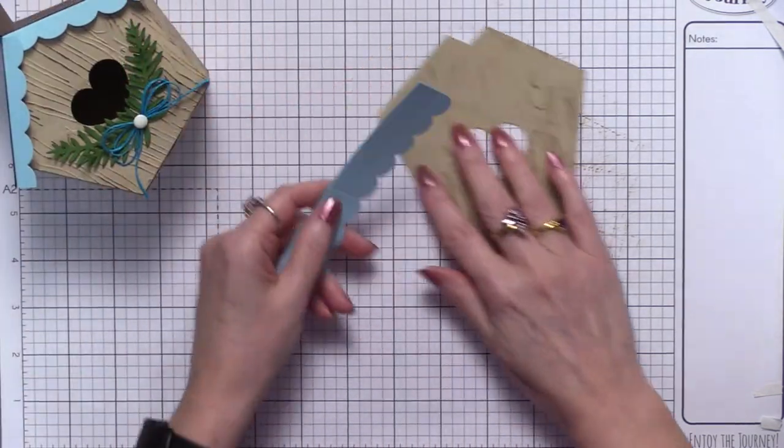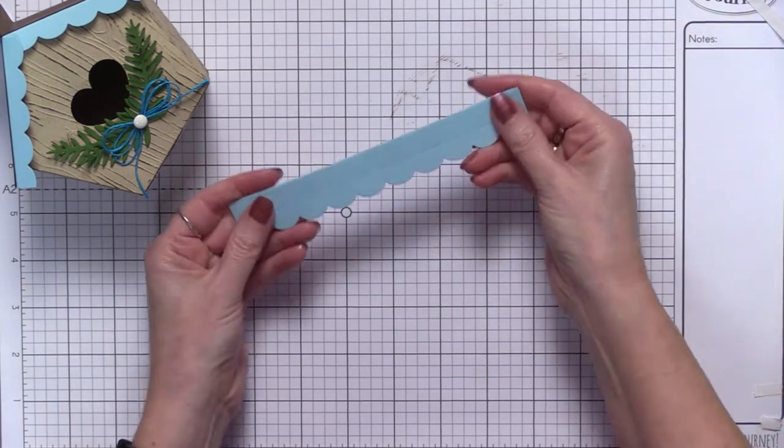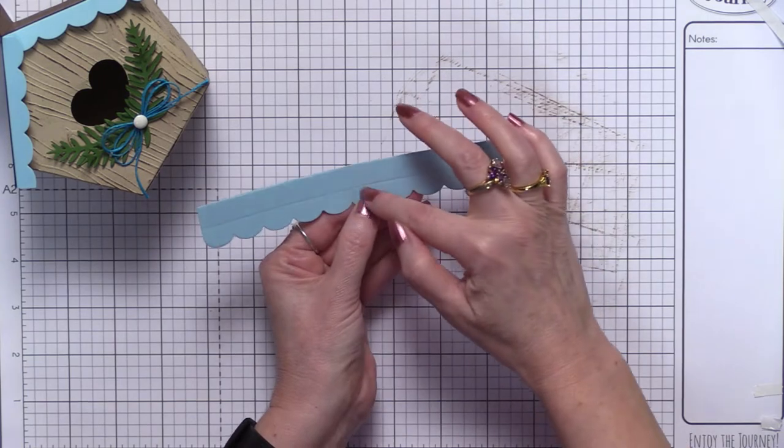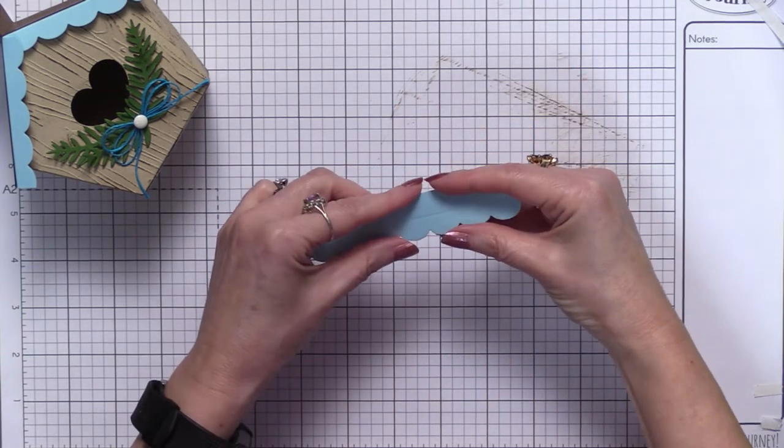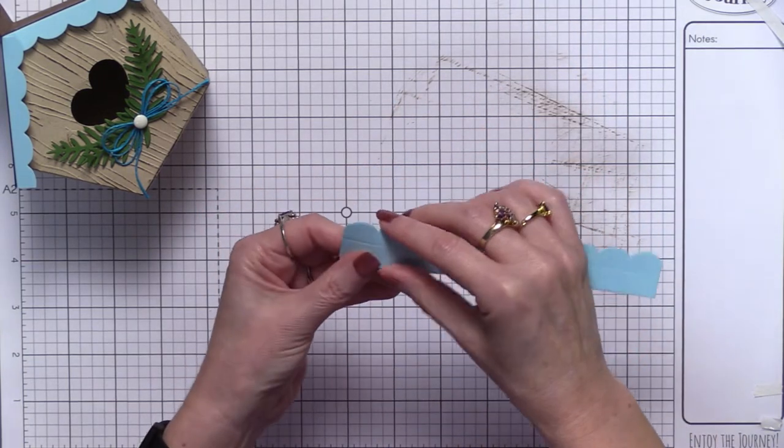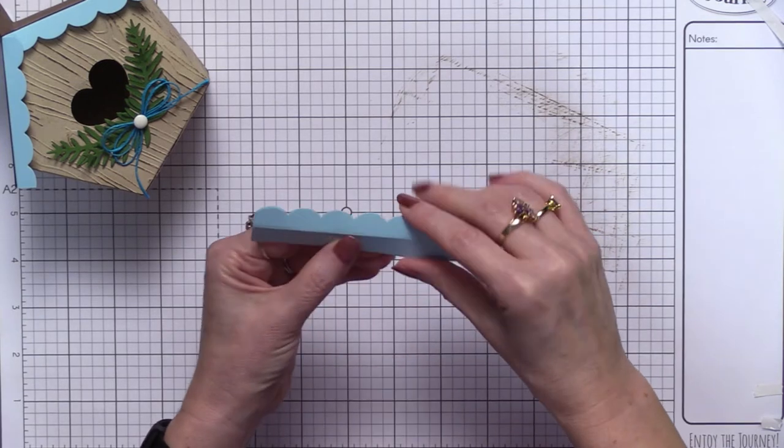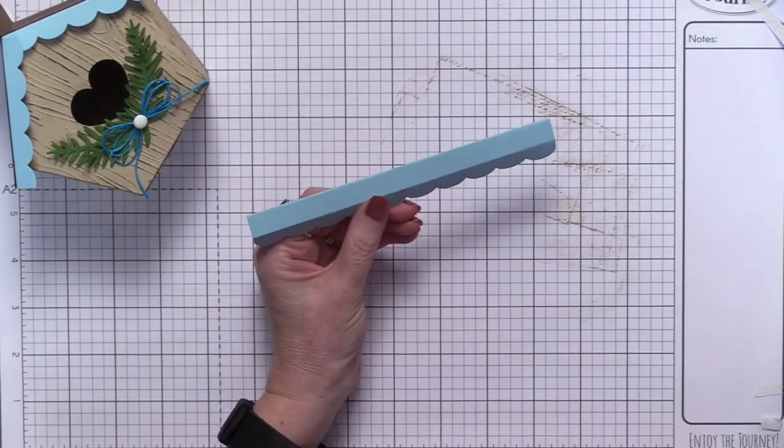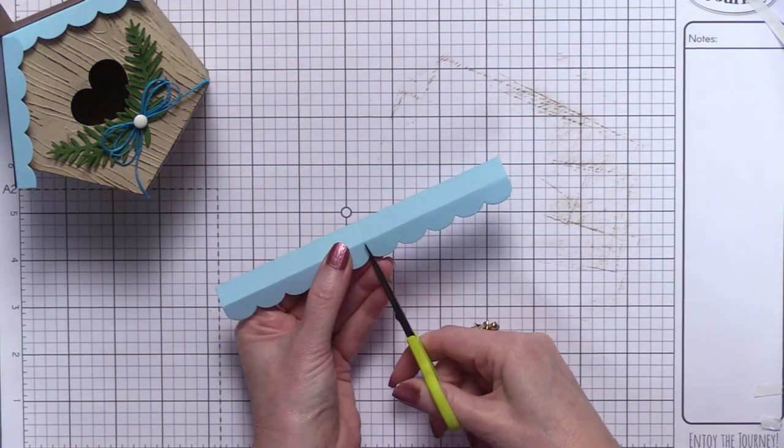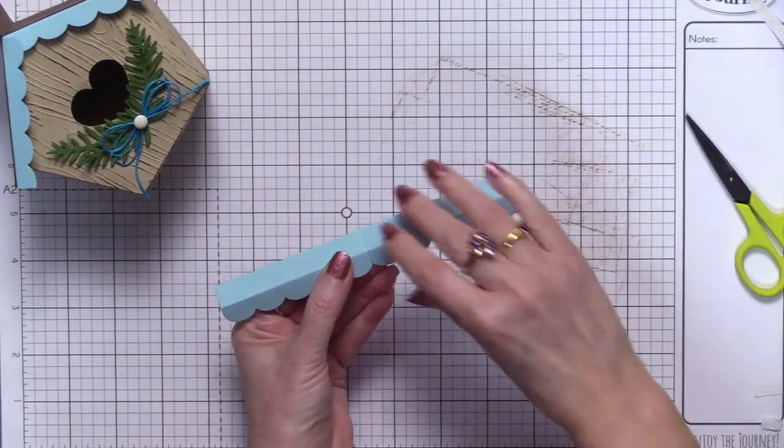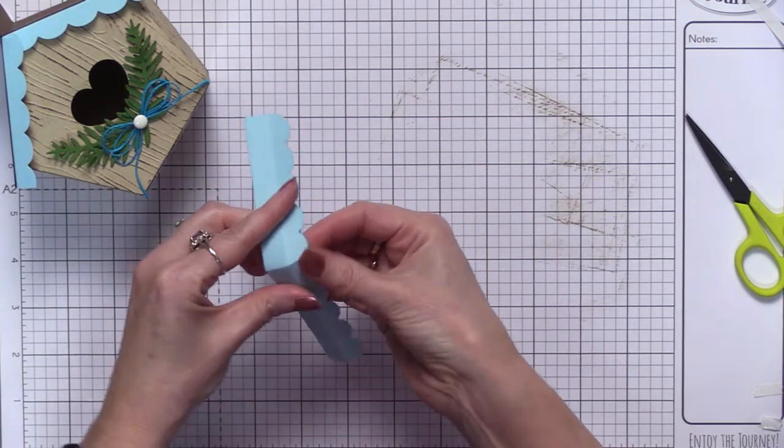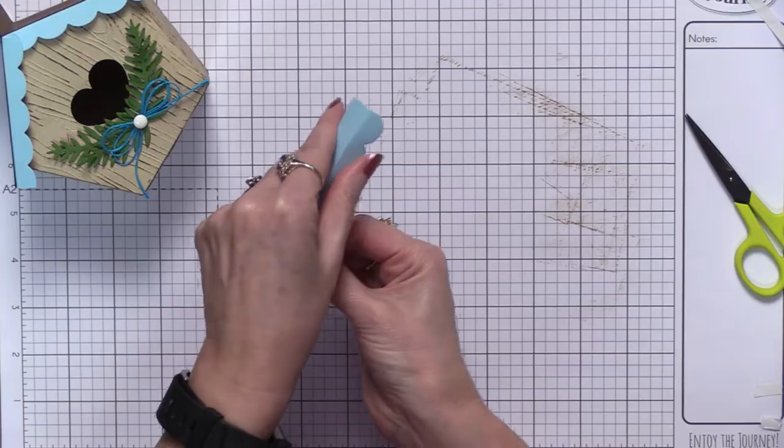Now to get this peak, before I adhered my roof, I went and die-cut one of our border strips. This is the scallop. Then I scored at the half inch line, and then you're just going to fold it in half. Now you're going to take your little snips and just snip up the center, and then when you fold it, you're going to get this really cute sort of peak.